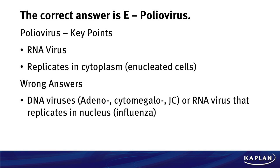Some key points to take away about poliovirus: number one, it's an RNA virus. For every virus in these answer choices, you've got to know on test day which ones are DNA versus RNA viruses — it's a big takeaway for today. Poliovirus is an RNA virus, which means replication happens in the cytoplasm. If you have that down, you'd be able to get this question. The other wrong answer choices are DNA viruses, which don't replicate in the cytoplasm — they replicate in the nucleus.